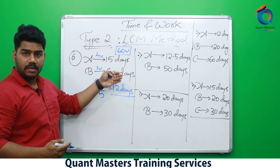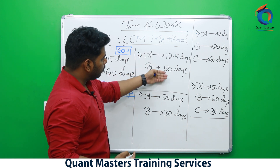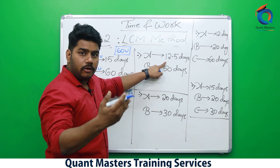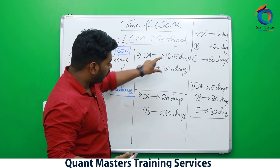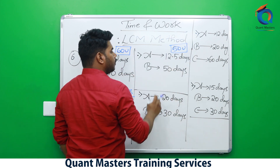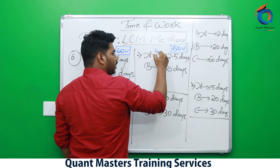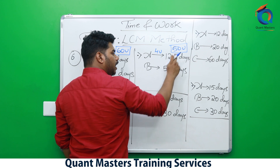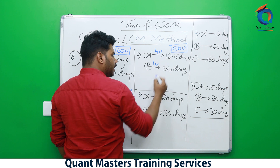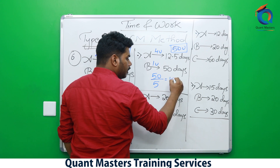Next problem: A completes work in 12.5 days, B in 50 days. 50 is a multiple of 12.5, so LCM is 50. Total work is 50 units. A does 50/12.5 = 4 units per day, B does 1 unit per day. Together they do 5 units per day. To complete 50 units: 50/5 = 10 days.